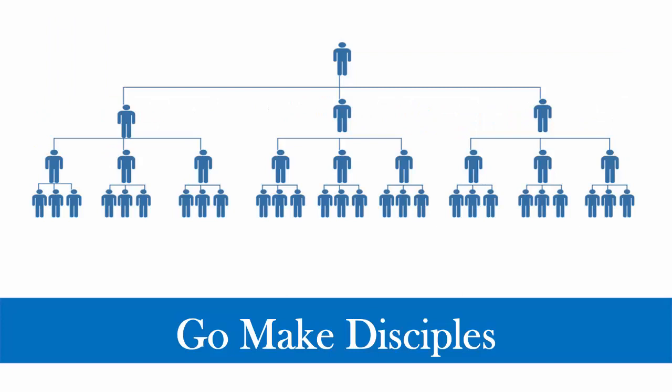As I introduced at the end of the previous lesson, the four steps I see in these two passages are: step one is go, step two is preach, step three is baptize, and step four is continued teaching. When these four steps are completed and the individual is receptive every step of the way, the result is a disciple-making disciple of Jesus Christ. This lesson will begin to explore the first of these four steps — how we can find opportunities to make disciples for Jesus Christ.